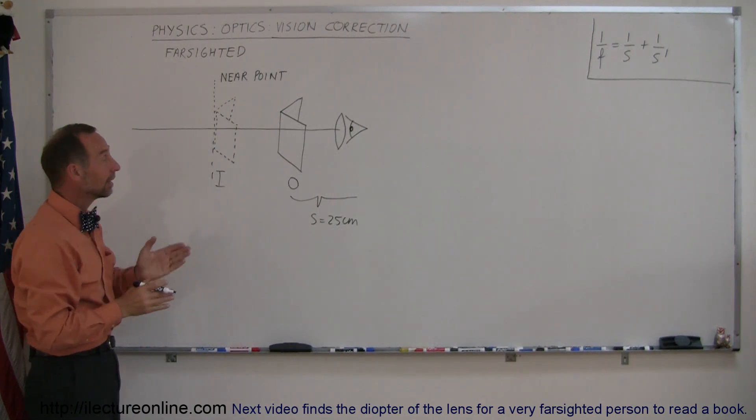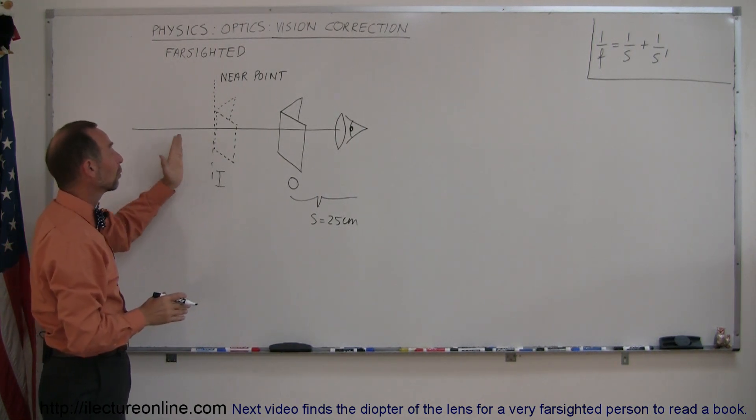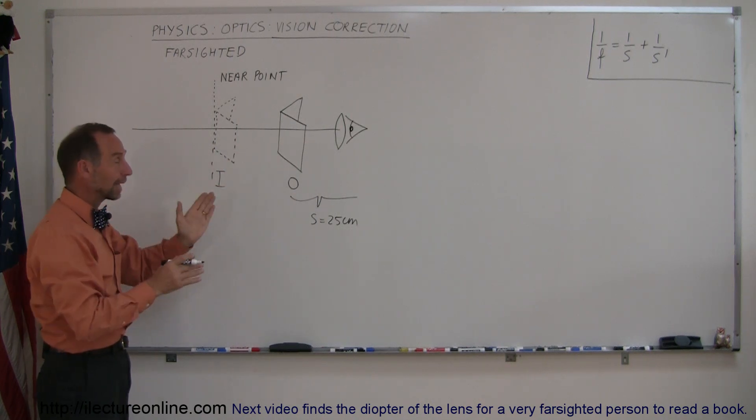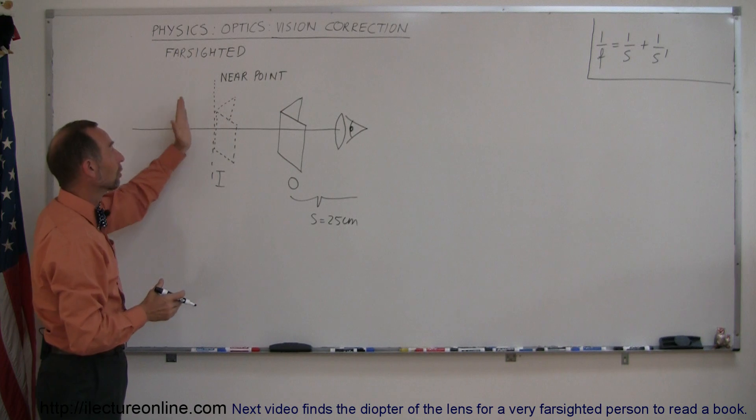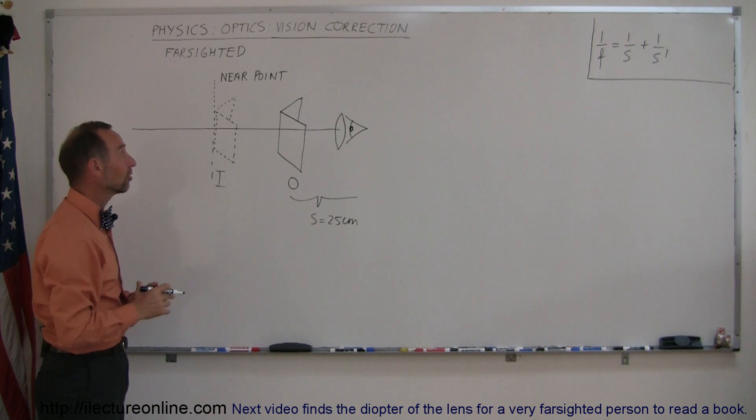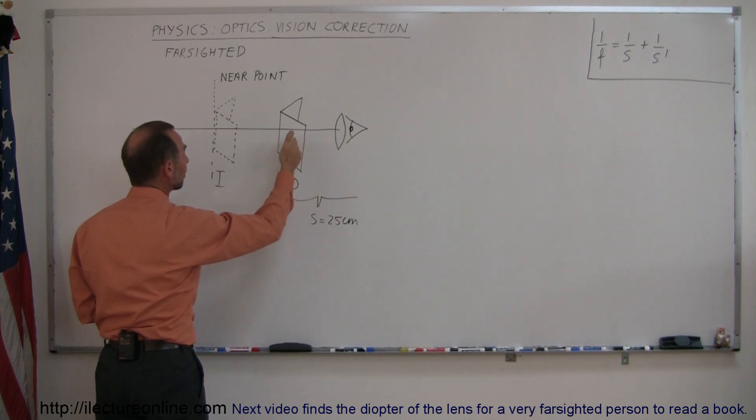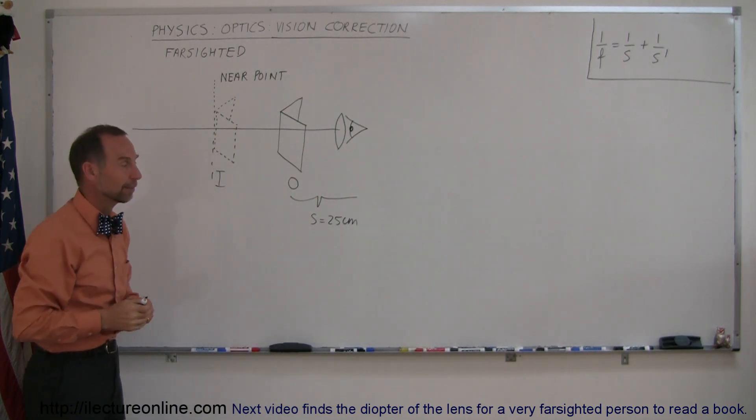See if you're farsighted, that means there's a point beyond which you can see things clearly, but within that distance you can't see anything. And so that's called the nearest point at which you can see things clearly. So what you need to do is put on some glasses that will cause an image to occur at the near point where you can see it clearly.